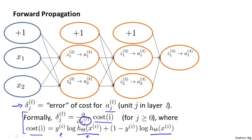If we could go inside the neural network and change those z(l, j) values a little bit, that would affect the values the neural network is outputting and change the cost function. So these delta terms are the partial derivative of the cost function with respect to these intermediate terms we're computing. They're a measure of how much we'd like to change the neural network's weights to affect these intermediate values, so as to affect the final output h(x) and therefore the overall cost. Don't worry if this partial derivative intuition didn't fully make sense.